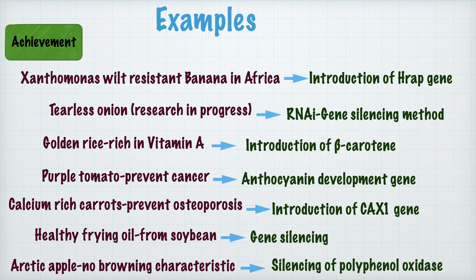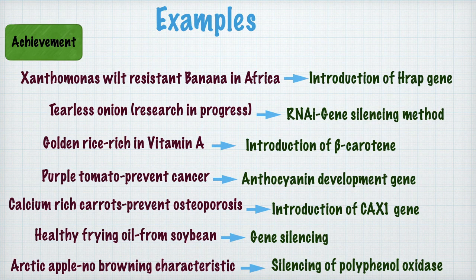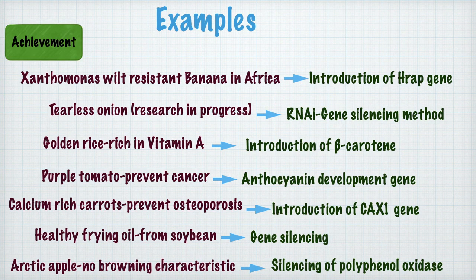There are many other examples. First is Xanthomonas wilt-resistant banana in Africa. This wilt had damaged many banana fields in Africa, where banana is a staple food. Through production of the Harp gene from capsicum, scientists developed a new variety of wilt-resistant banana. Another is tearless onion in New Zealand, where research is in progress using RNAi or gene silencing methods.